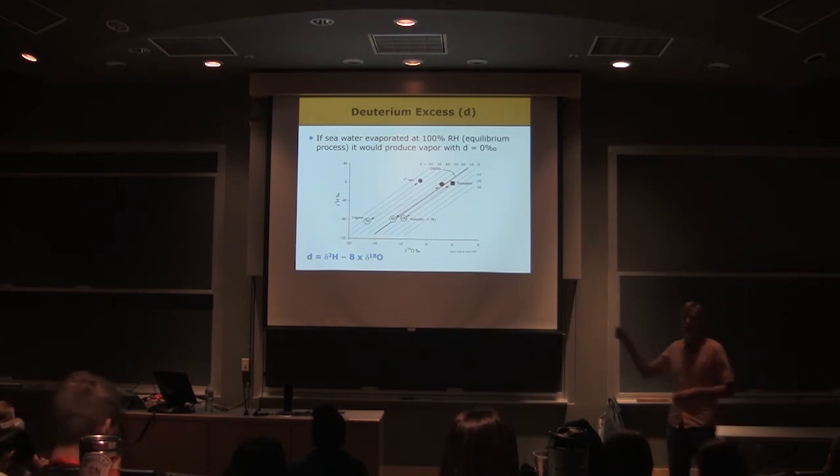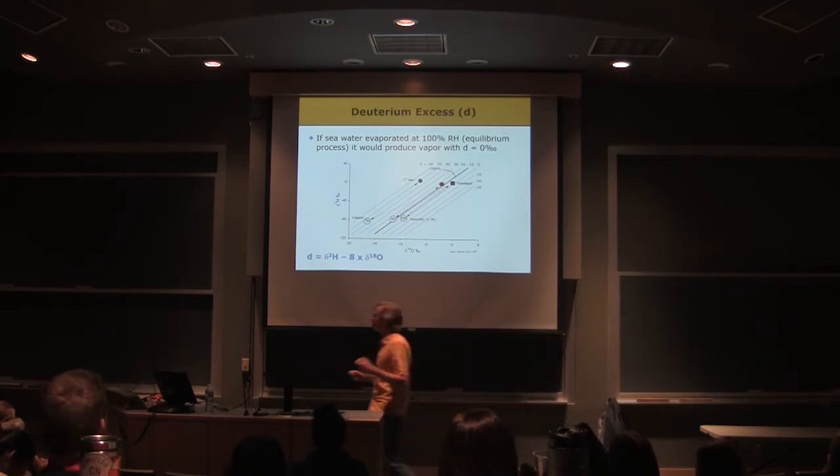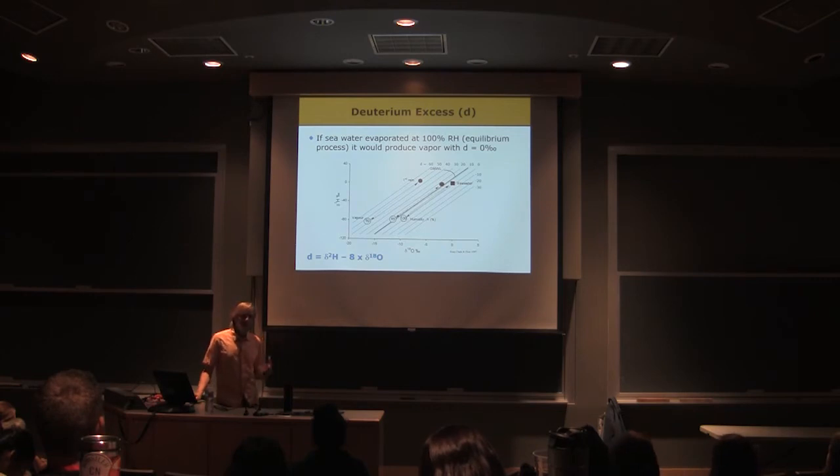So that 1 minus h term in the equation I showed you goes to 0. We only have the equilibrium fractionation. So it would give us a vapor with a deuterium excess value of 0, the same as the seawater that we started with.